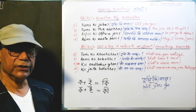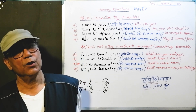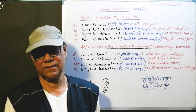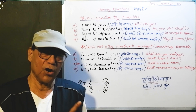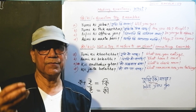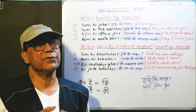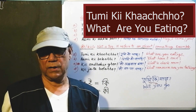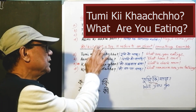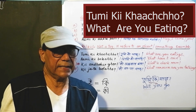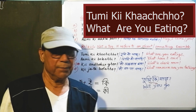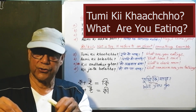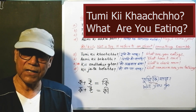Now come to the stressed ki — dirgha ki. Whenever this stressed ki is in a question, it refers to the English equivalent 'what,' and your answer cannot be yes or no. You have to give a proper, substantial answer — the name of something. For example, 'tumi ki khatsho?' — here ki is stressed. That means 'what are you eating?' Note the difference: if I say it with unstressed ki, 'tumi ki khatsho,' that means 'are you eating?' with a yes/no answer.